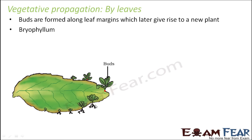Bryophyllum is also known as the miracle leaf plant because leaves giving rise to a new plant doesn't happen very commonly — it is something rare. If you take a leaf of this plant and put it in the soil, buds will arise and finally a new plant will be formed. The buds are formed at specific places on the leaf margin called leaf notches, and when these buds fall in the soil, new plants will arise.